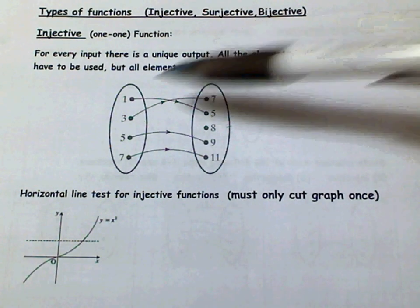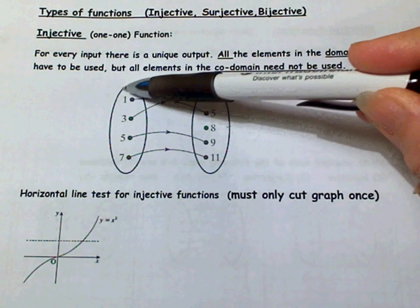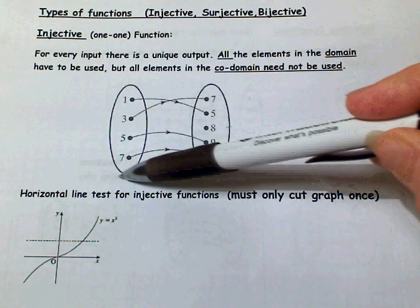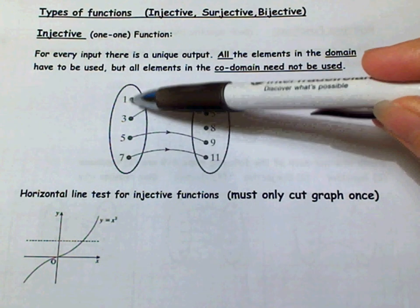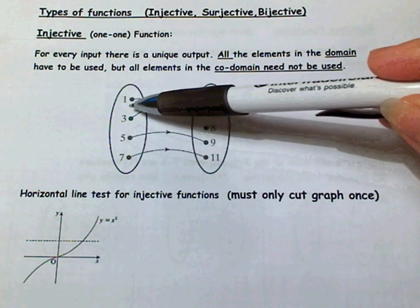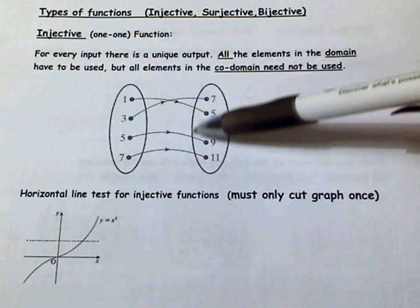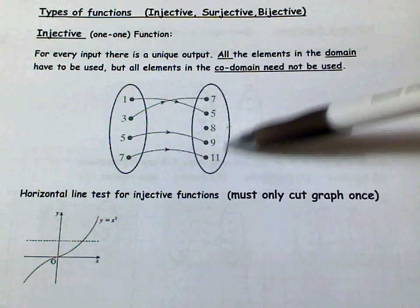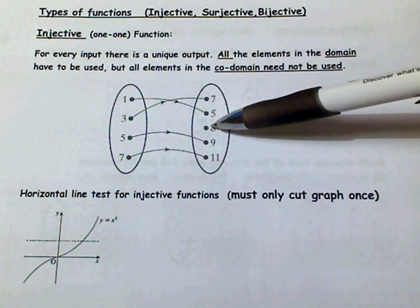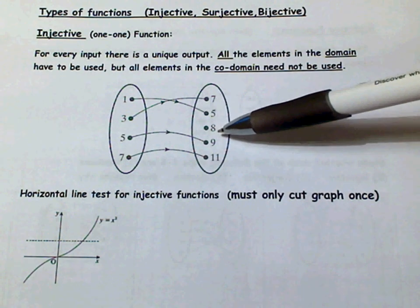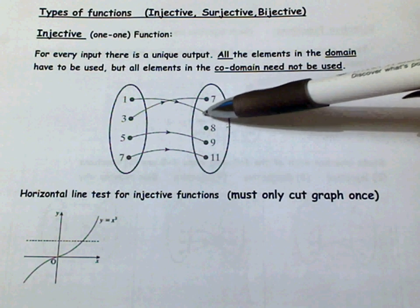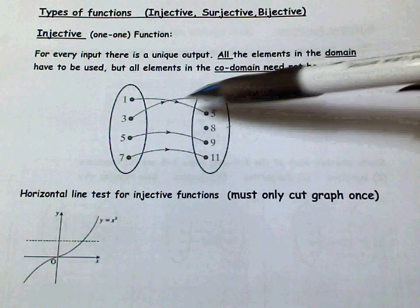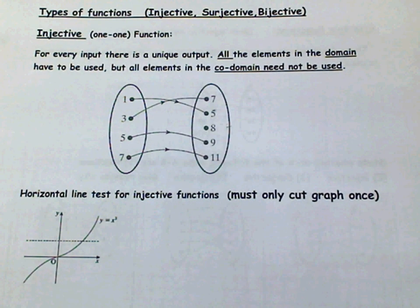All the elements in the domain have been used. Here's our domain or input values. All the elements in the domain have to be used in an injective function, but all the elements in the co-domain do not have to be used. You can see here that 8 is not used. This is an injective function because all inputs have unique outputs: 1 goes to 5, 3 goes to 7, 5 goes to 9, and 7 goes to 11.